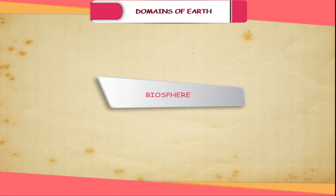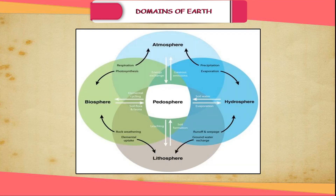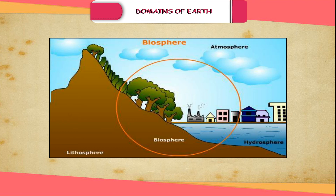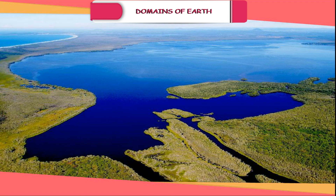Biosphere. Life is possible where all the three zones, the lithosphere, the hydrosphere and the atmosphere, come in contact. This narrow contact zone consisting of living organisms is called biosphere. This zone extends a little beyond each of these three domains.